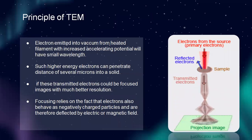Principle of transmission electron microscope: electrons emitted into vacuum from a heated filament with increased accelerating potential will have small wavelengths. Such high-energy electrons can penetrate a distance of several microns into a solid. If these transmitted electrons can be focused, an image with much better resolution is obtained. Focusing relies on the fact that electrons also behave as negatively charged particles and are therefore deflected by electric or magnetic fields.